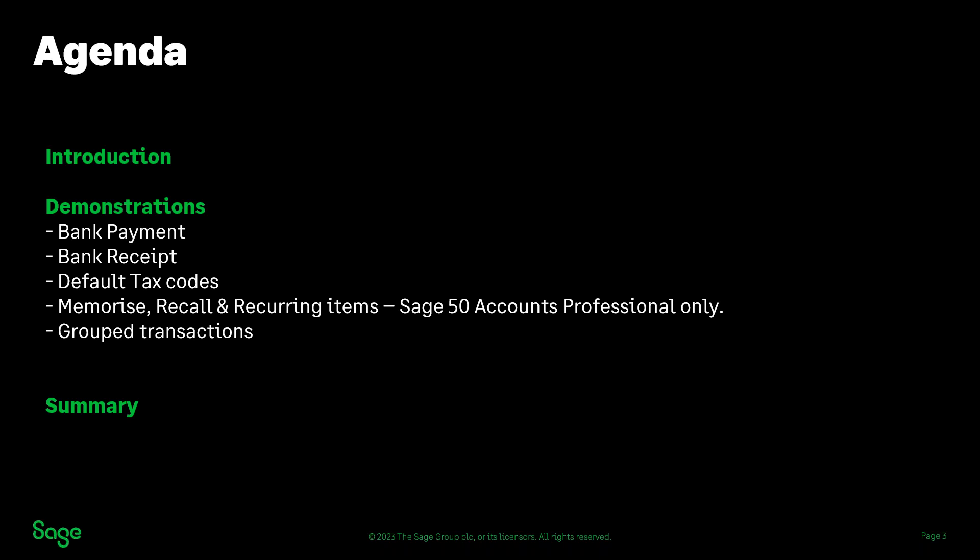We're going to start with introducing the bank payments and receipts window. We're going to discuss group transactions, memorizing, recall, and recurring items. You will only have access to memorize, recall, and recurring items if you are on the Sage 50 Accounts Professional variant. I'll also be including some demonstration within the software. Please do keep your questions coming throughout the session.